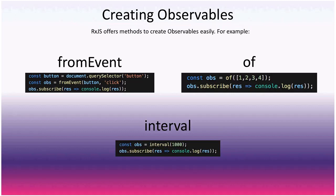The of operator — chosen deliberately — creates an observable: const obs equals of with an array of one, two, three, four. In this case it emits only once, emitting the whole array. You can put as many arguments as you want inside of and it emits them in order. This differs from from, which would emit each element — one, two, three, four — individually.